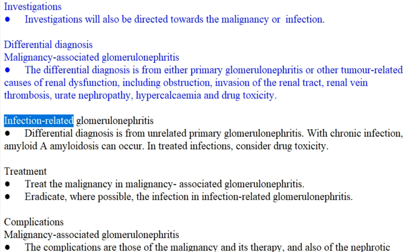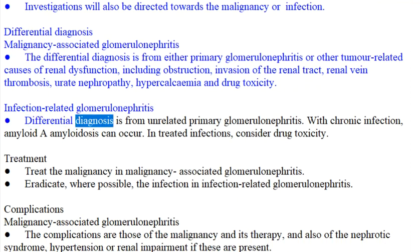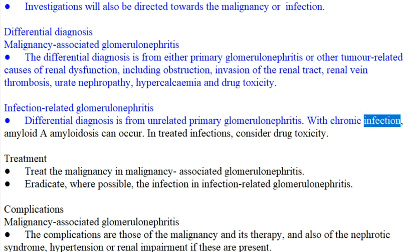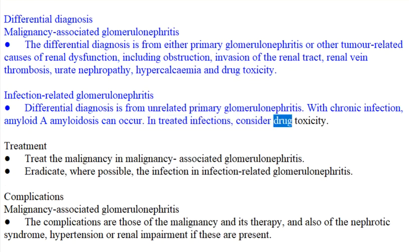Infection-related glomerulonephritis: differential diagnosis is from unrelated primary glomerulonephritis. With chronic infection, amyloid A amyloidosis can occur. In treated infections, consider drug toxicity.